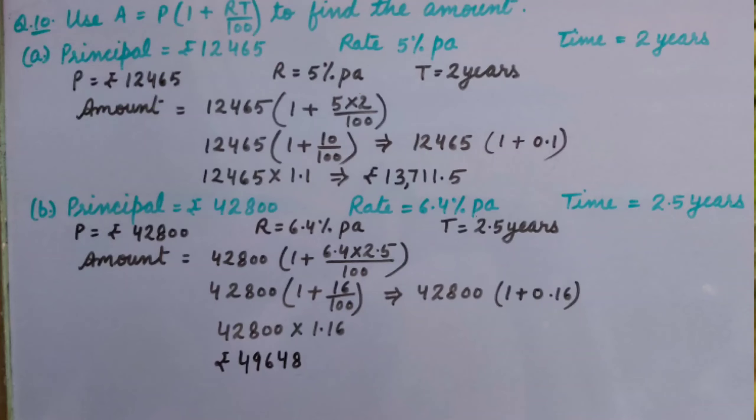Amount = 12,465 × (1 + (5 × 2)/100). When we solve 5 × 2/100, we get 12,465 × (1 + 10/100). Solving 10/100, we get 12,465 × (1 + 0.1).